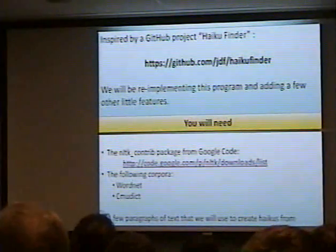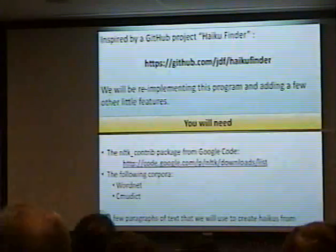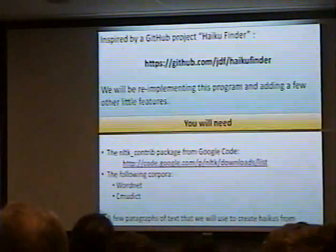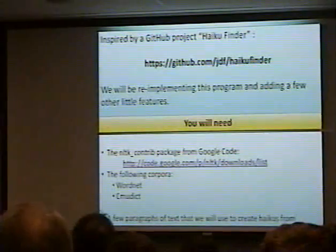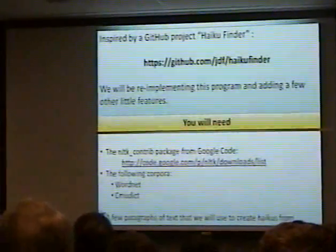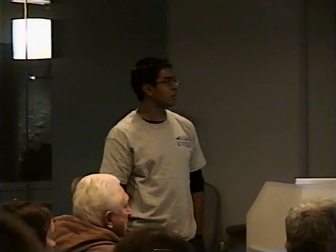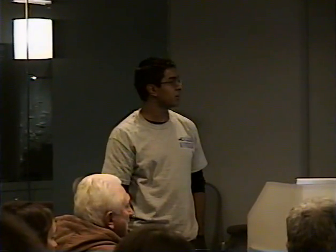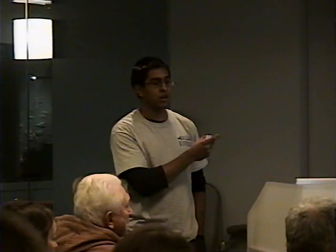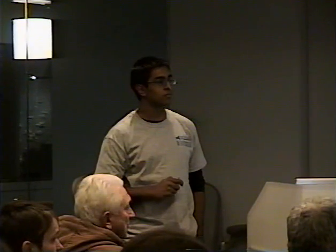I didn't see it on the actual NLTK website. If you type in NLTK Google Code, it should be one of the first results — it's a bunch of user-contributed packages outside of the core NLTK package. You will also need the WordNet corpus as well as CMU dict. These are corpora you can download using the NLTK download function. WordNet unzips to 36 megabytes of data on disk and CMU dict is almost four megabytes — so it's not too bad.